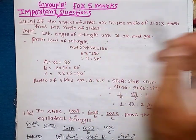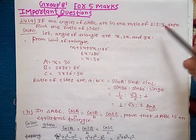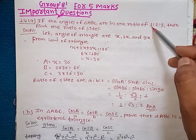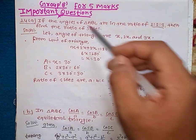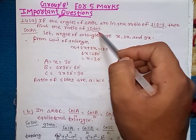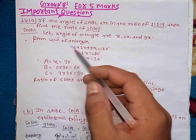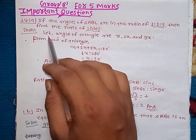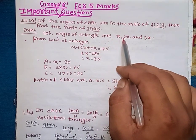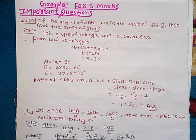If the angles of the triangle ABC are in the ratio of 1 is to 3 is to 3, I am going to ask the angle of the triangle as x, 2x and 3x.